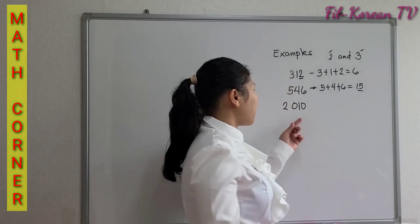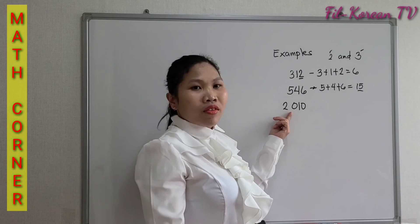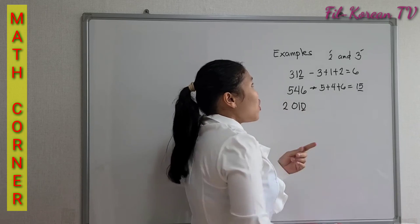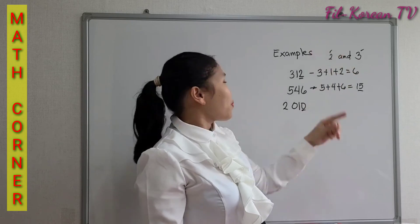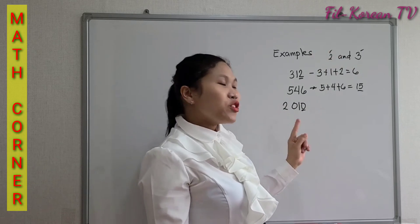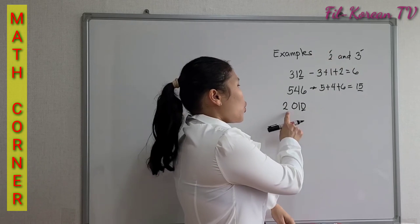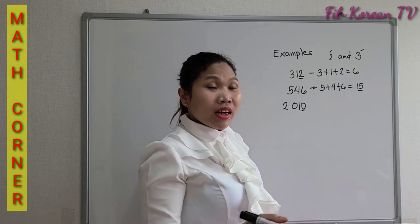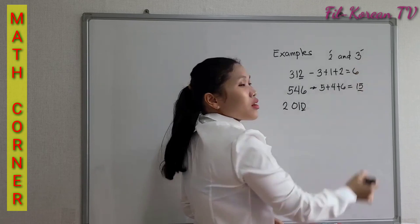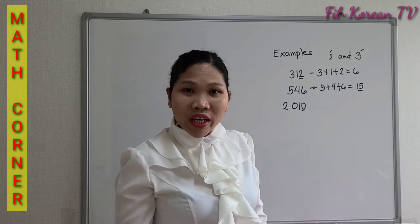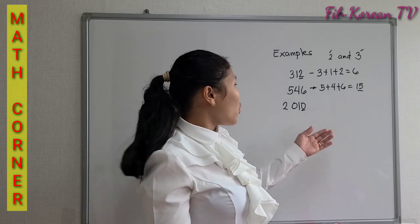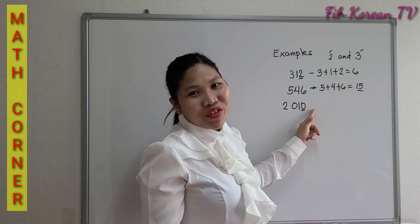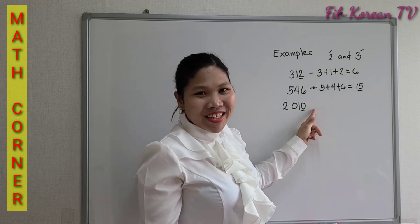2010. It ends in 0, so it is divisible by 2. If we add the digits — 2 plus 0 plus 1 plus 0 — the answer is 3, which is divisible by 3. Therefore, 2010 is divisible by 6.